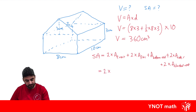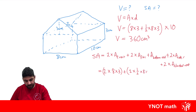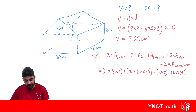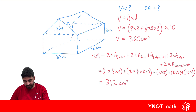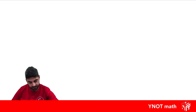Two times the 8 by 3 front rectangle, plus two times the triangle (half times 8 times 3), plus the 8 by 10 bottom rectangle, plus two times the 10 by 3 side rectangles, plus two times the 5 by 10 slanted rectangles. Throwing all that in the calculator gives us 312 centimeters squared. Let's look at another example — a cake-looking shape.